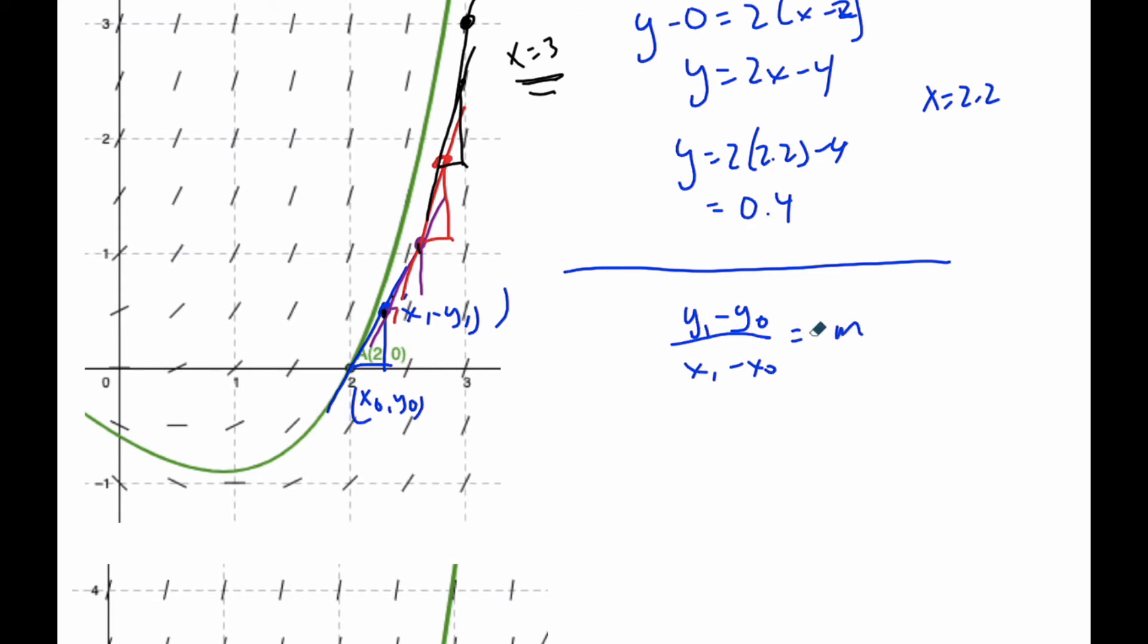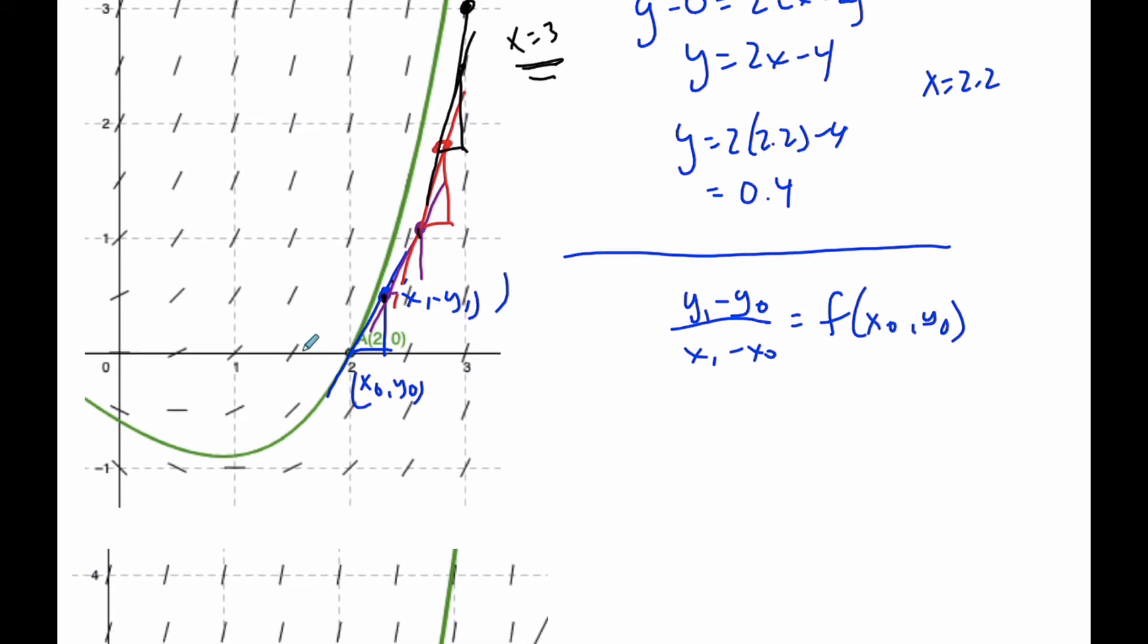The slope was simply the derivative at that point. I'm going to say f at (x0, y0), and that's the derivative at the point (x0, y0). I also know that this part here is simply the step of 0.2, which is what we are calling h.